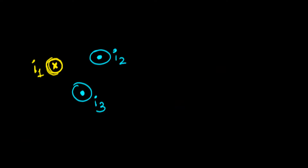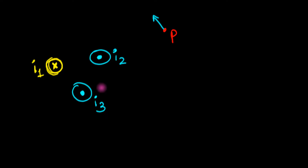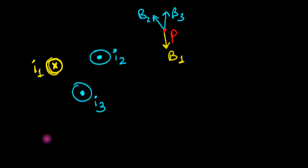All three currents are going to produce a magnetic field around them. If I choose a point P over here, this current is going to produce a magnetic field approximately in this direction. You have to use the right-hand thumb rule — the magnetic field is in circles. So B2 would be this way, B3 would be this way, and the magnetic field created by I1, B1, would be somewhat this way.